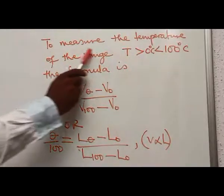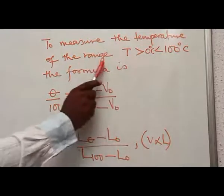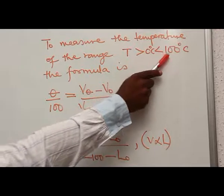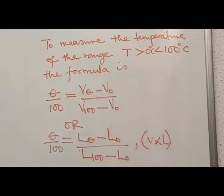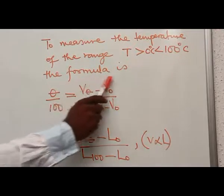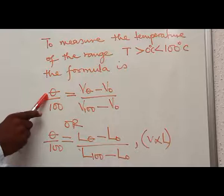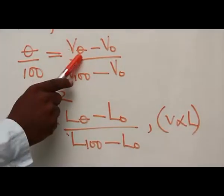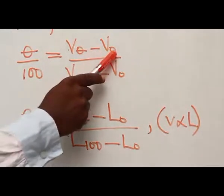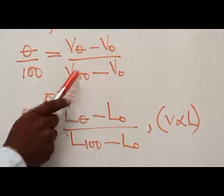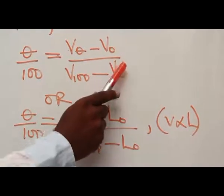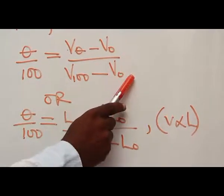To measure the temperature T in the range 0°C < T < 100°C, the formula is: T divided by 100 equals the volume at that temperature minus the volume at the ice point, divided by the volume at the steam point minus the volume at the ice point.